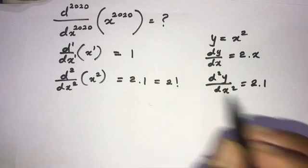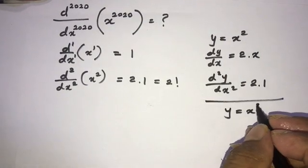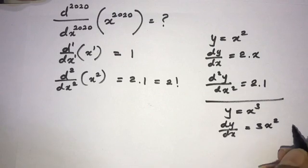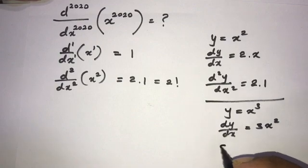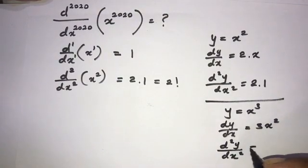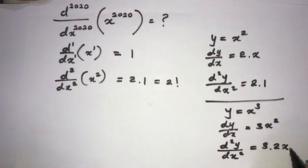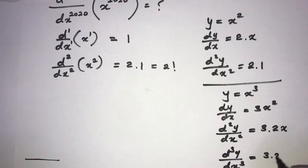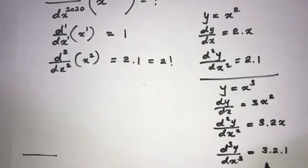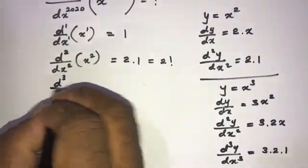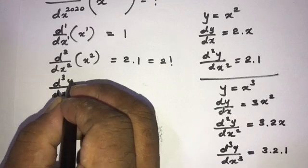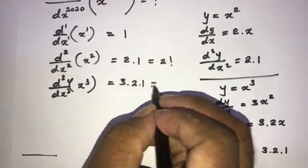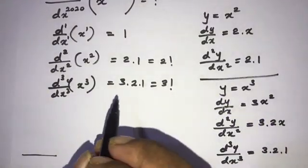Next, if we get y equal to x cubed, we know dy/dx is equal to 3 times x squared. Differentiating again, the second derivative of y is equal to 3 times 2x. Differentiating once more gives 3 times 2 times 1, which equals 3 factorial. So you can see there is a pattern.